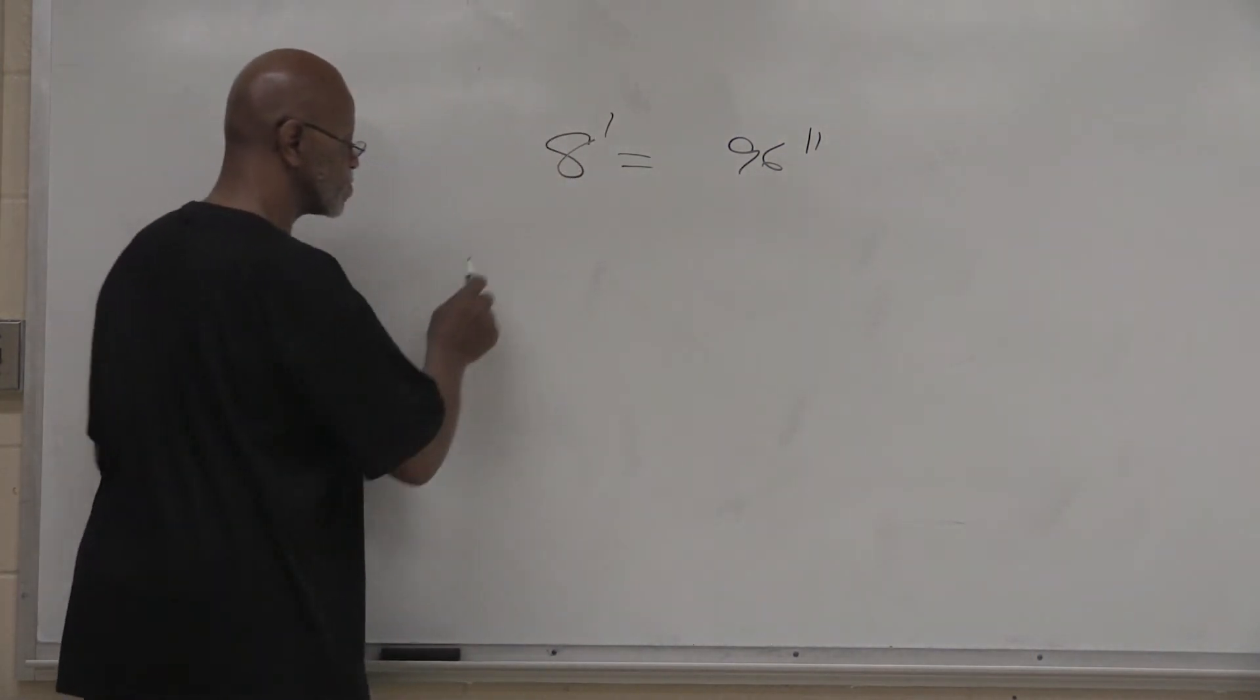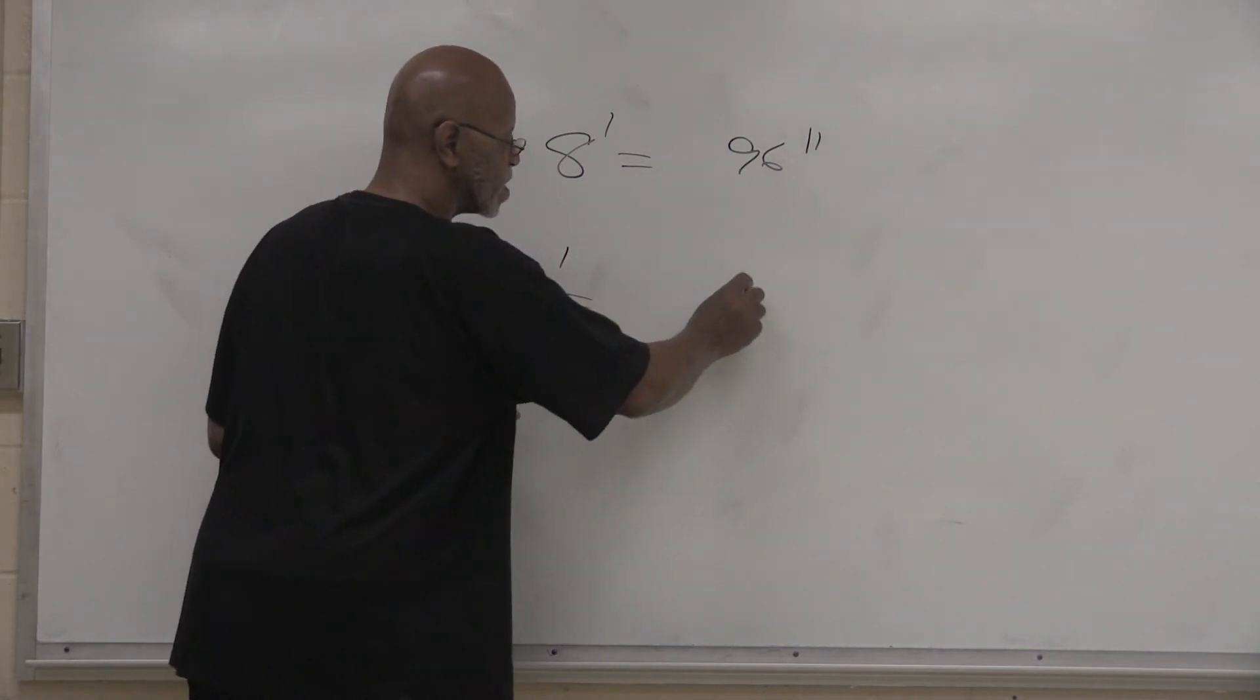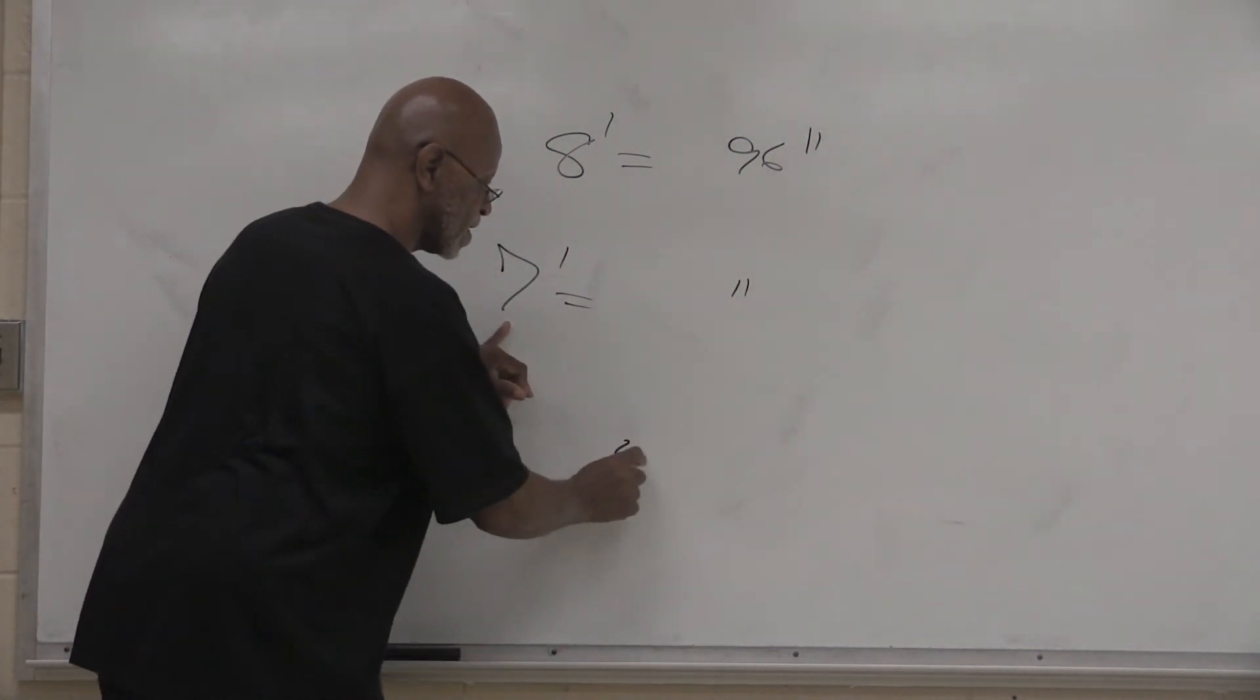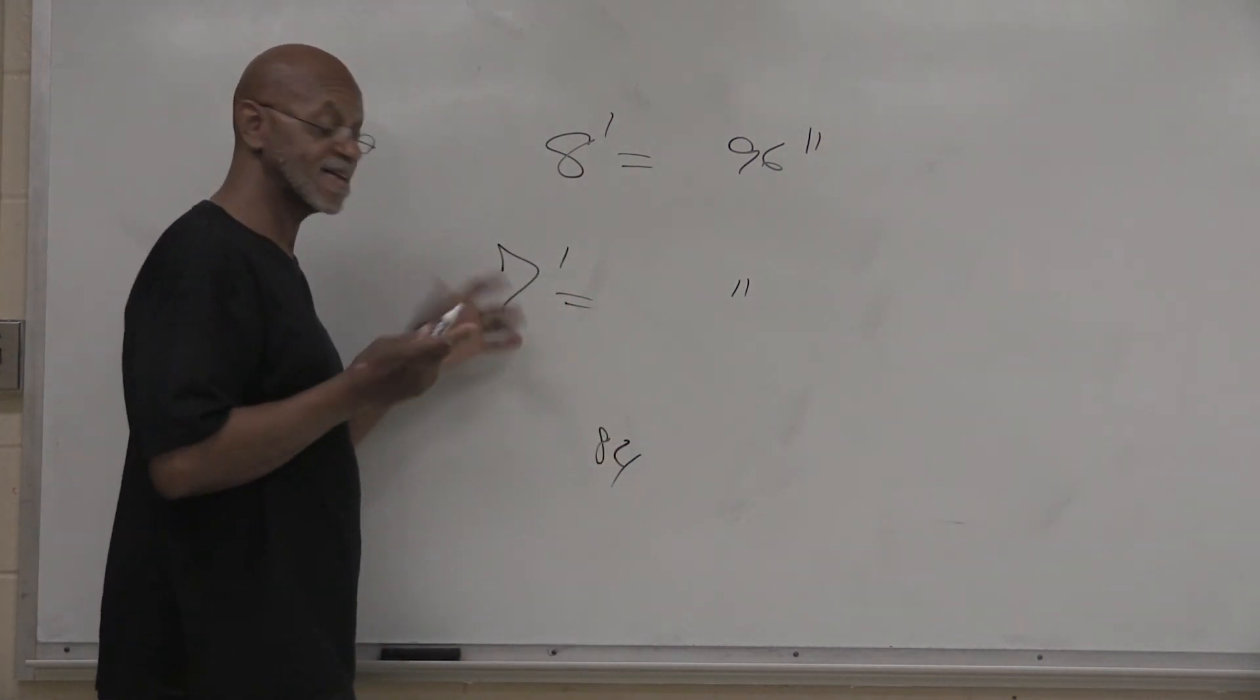Let's do 17 feet. We want to convert to inches. So 7 plus 7 is 14, carry my 1. 1 plus 1 is 2, plus the carry is 3. 17 plus 3 gives us 204. That's it.